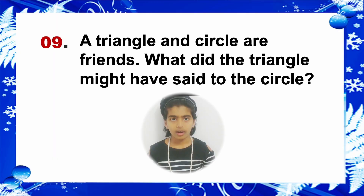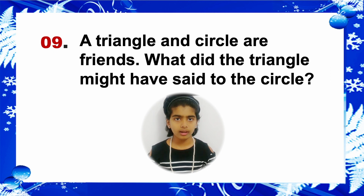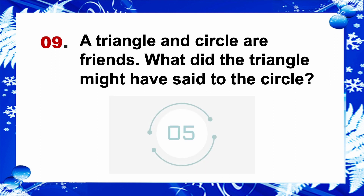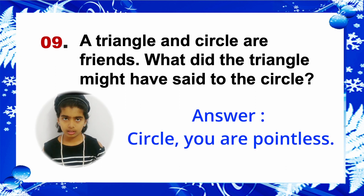Riddle 9: A triangle and a circle are friends. What did the triangle say to the circle? Answer: 'You are pointless.'